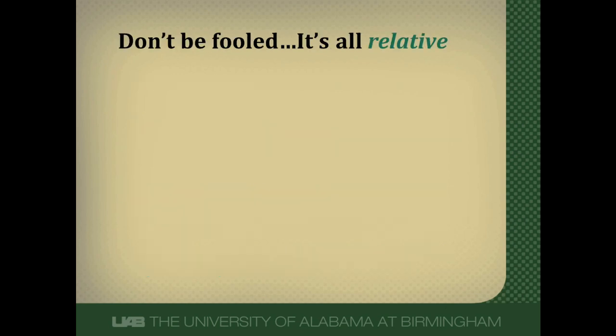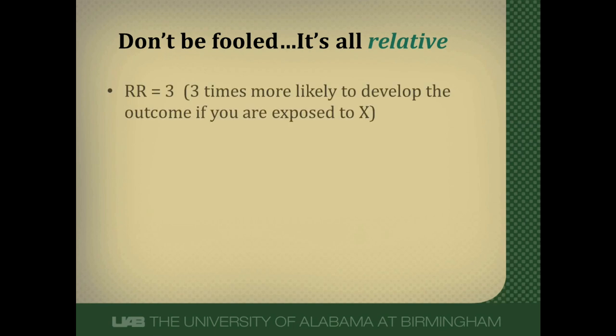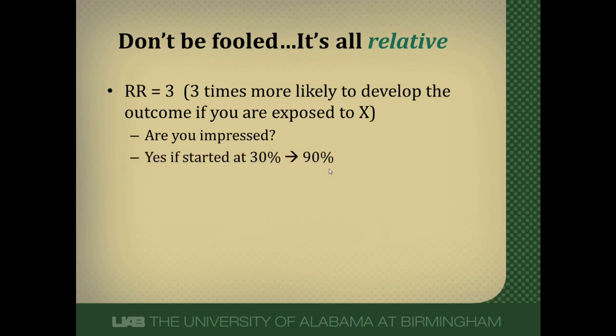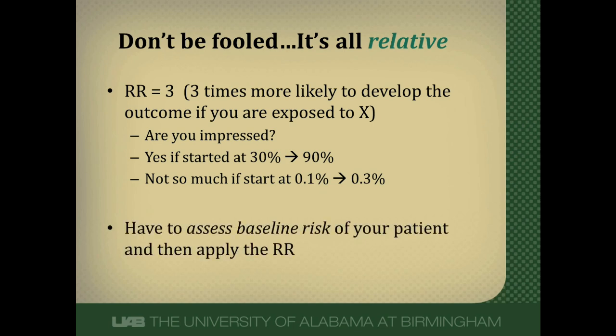One thing to keep in mind: relative risk is all relative. A relative risk of 3 means you're 3 times more likely to develop the outcome if exposed. But that's only impressive if the patient starts at 30% baseline risk and goes to 90% — not if they go from 0.1% to 0.3%. You must assess the baseline risk of your patient, then apply the relative risk to get their final risk of developing an outcome. This is how we use this information in clinical care.